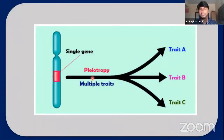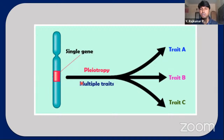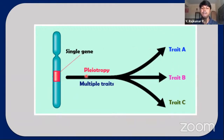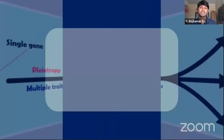Regarding the picture for pleiotropy: a single gene from the DNA is controlling or influencing multiple traits — trait A, trait B, trait C. A single gene having control over more than one trait is called pleiotropy.